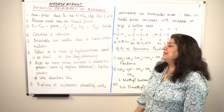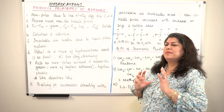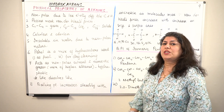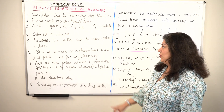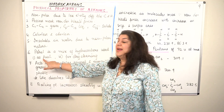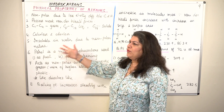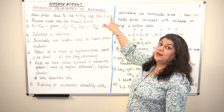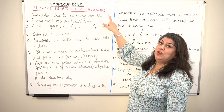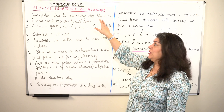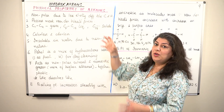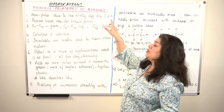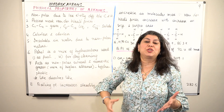An example: petrol is a mixture of hydrocarbons. One of its uses is as a fuel. It is used as a fuel because it has carbon and hydrogen. When you burn petroleum, the carbon burns to give carbon dioxide and hydrogen burns to give water.